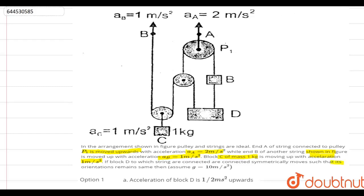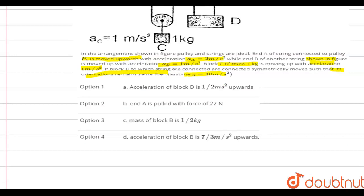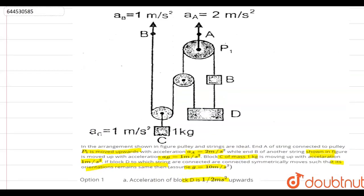Block D, to which strings are connected symmetrically, moves such that its orientation remains the same. Assume g = 10 m/s². We have to find which option is correct. Option A: acceleration of block D is 1/2 m/s². Option B: end A is pulled with force 22 N. Option C: mass of block B is 0.5 kg. Option D: acceleration of block B is 7/3 m/s² upwards.